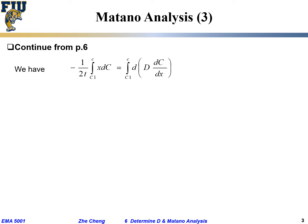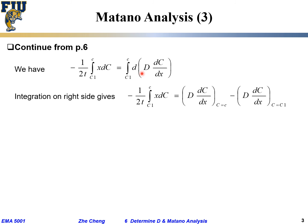On the right side, integration and differential cancel out, giving us the difference of the function D times dc/dx — evaluated at c equals small c minus when c equals c1. Integration between a fixed range just becomes the difference between those two endpoint values.